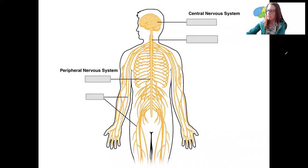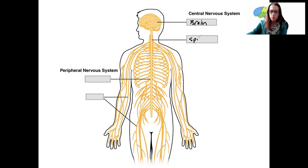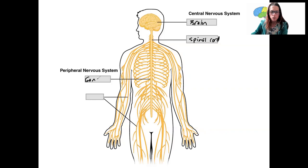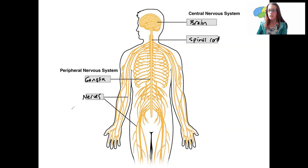Here we saw a similar picture to this two weeks ago or so. We've got the central nervous system — this is the brain and the spinal cord. Those are the physical two main components that make up the central nervous system. The peripheral nervous system is made up of these groups of cell bodies called ganglia and nerves.